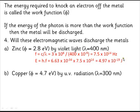E equals hf to get our energy in joules. Turn that into electron volts. 3.1 electron volts. 3.1 electron volts is the energy of the photon. That's more than the work function. Therefore, yes, this metal will get discharged by this light.